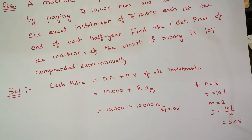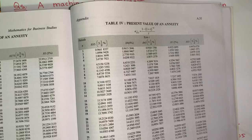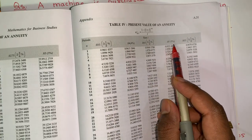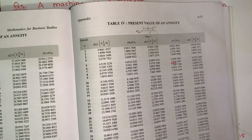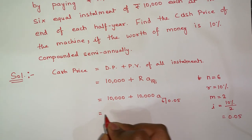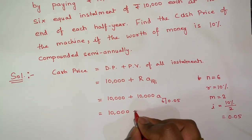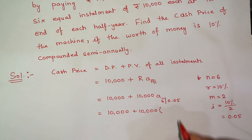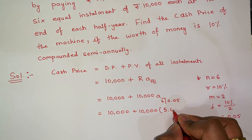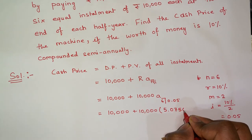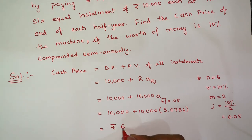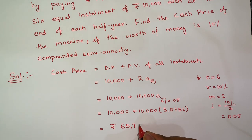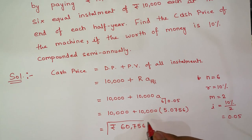We look up the A(n, i) table at the back of the book for i = 5% and n = 6, and get A(6, 0.05) = 5.0756. So Cash Price = 10,000 + 10,000 × 5.0756 = 10,000 + 50,756 = ₹60,756. Hence, ₹60,756 is the cash price of the machine.